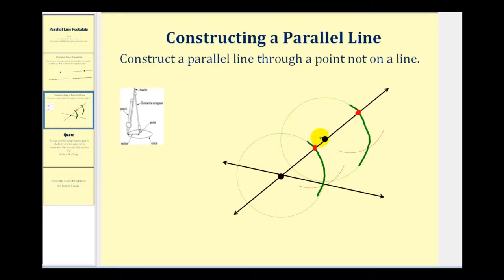Now we're going to take the protractor, put the point of the protractor here on this red point, and then put the pencil of the protractor right here at the intersection of this green arc and the black line. Once we have this length marked with our protractor, we're going to swing another arc that intersects the given line, something like this.